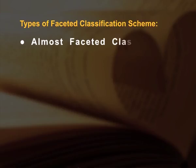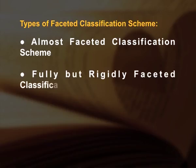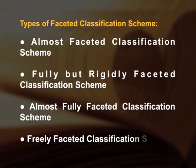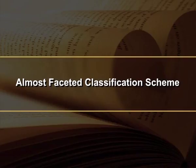Types of faceted classification scheme: first, almost faceted classification scheme; second, fully but rigidly faceted classification scheme; third, almost fully faceted classification scheme; fourth, freely faceted classification scheme. Almost faceted classification scheme consists of a large schedule enumerating most subjects of the past, the present and the anticipated future, and in addition a few schedules of common isolates and also some schedules of special isolates (Ranganathan, 1967). In addition to schedules of main subjects, it enumerates some schedules of common isolates and special isolates for each subject.